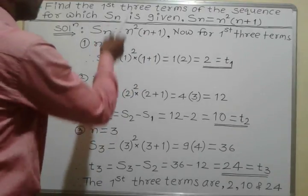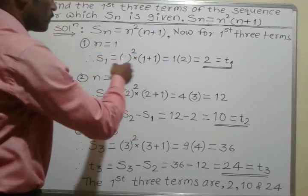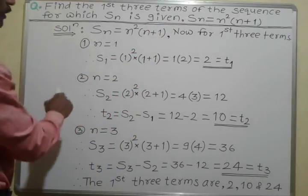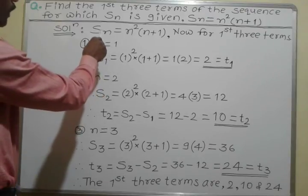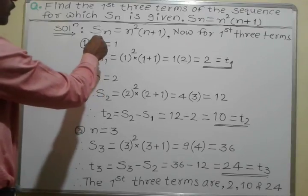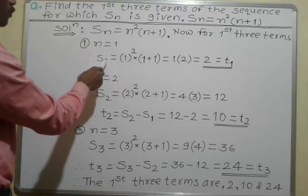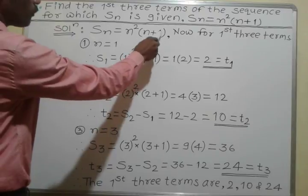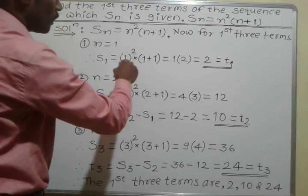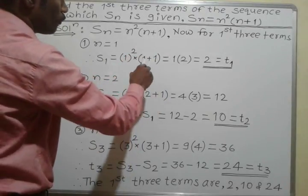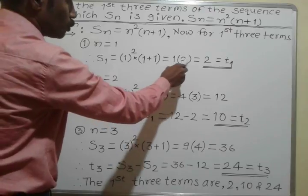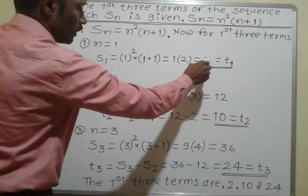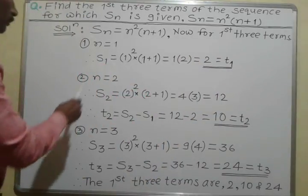I will find three terms of the sequence. First, n is equal to 1. I will substitute the value of n, that is 1, in this formula. S1 is equal to 1 square into 1 plus 1, which is 1 square is 1, and 1 plus 1 is 2. That is, 1 into 2 is equal to 2. This is the value of T1 — S1 is equal to T1 is equal to 2.